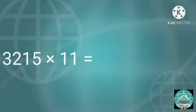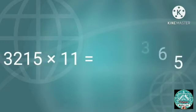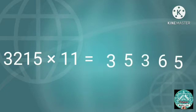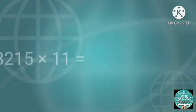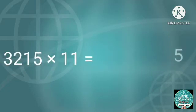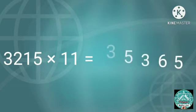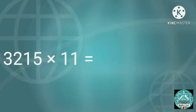Let's try. 3,215 multiplied by 11. 5, 1 plus 5 equals 6, 2 plus 1 equals 3, 3 plus 2 equals 5, then 3. So the answer is 35,365.